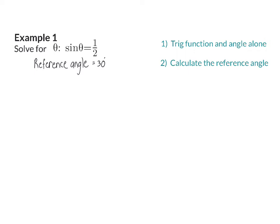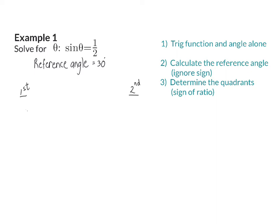When calculating the reference angle, always use a positive ratio because we want the value in the first quadrant — the reference or acute angle is always positive. So we ignore the sign of the ratio to calculate the reference angle. The positive ratio does however indicate that we will work in the first and second quadrants where sin is positive. In the first quadrant, the angle is simply the reference angle, as no reduction formula is needed.